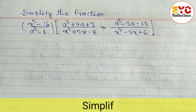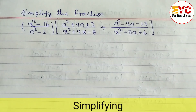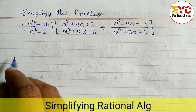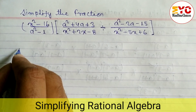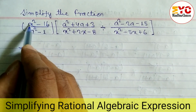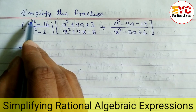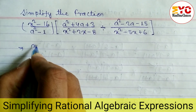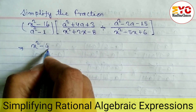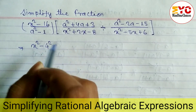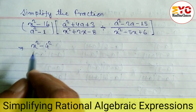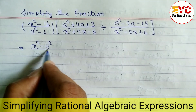In this video we will learn how to simplify fractions in the form of multiplication and division. We start with x squared minus 16. First, we convert it to the form a squared minus b squared, so we write x squared minus 4 squared, because the square root of 16 is 4, and 4 squared is 16.